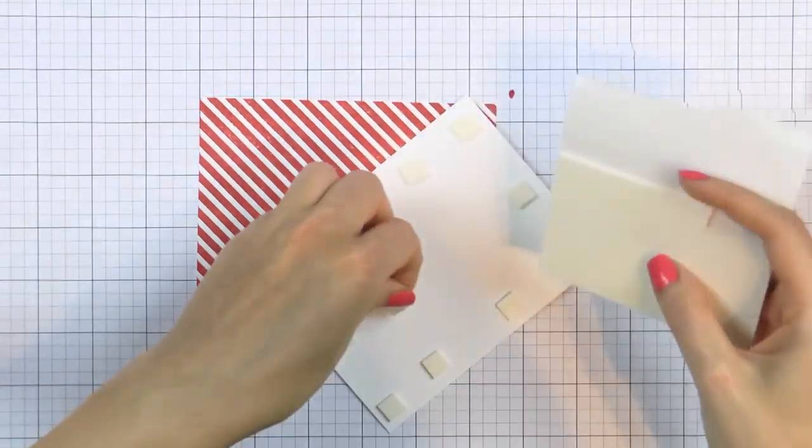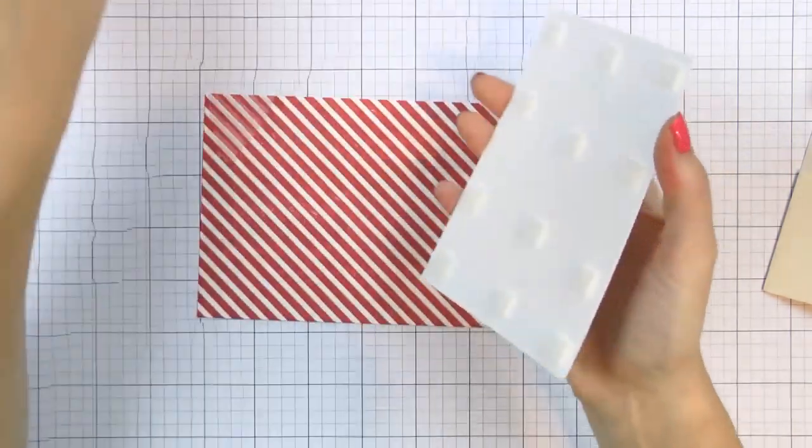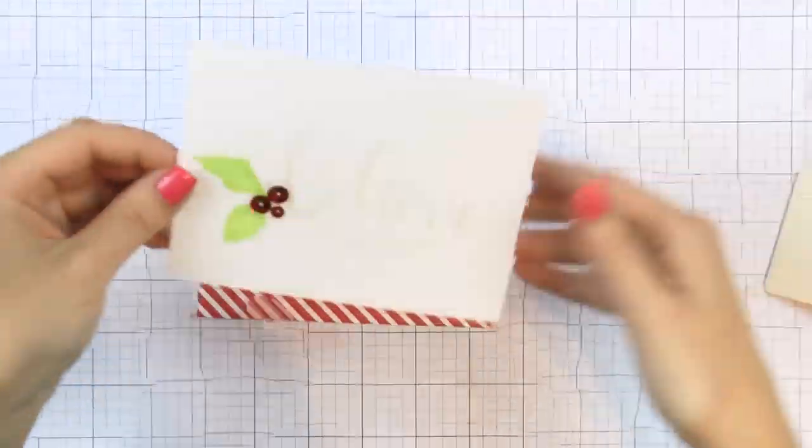I foam mounted all of my sentiment panels onto my red diagonal backgrounds and I adhered them onto A2 top folding landscape cards.